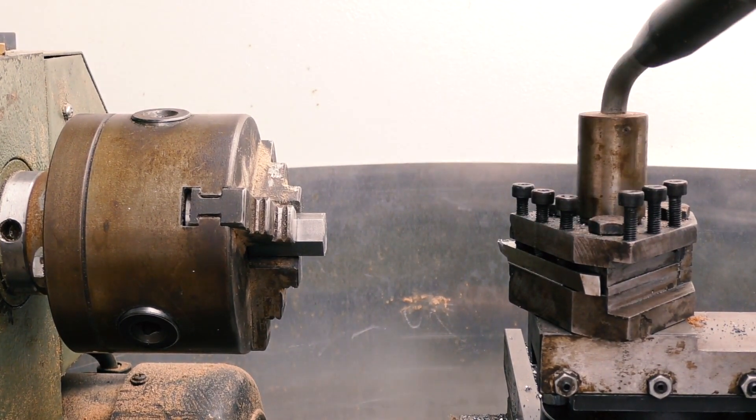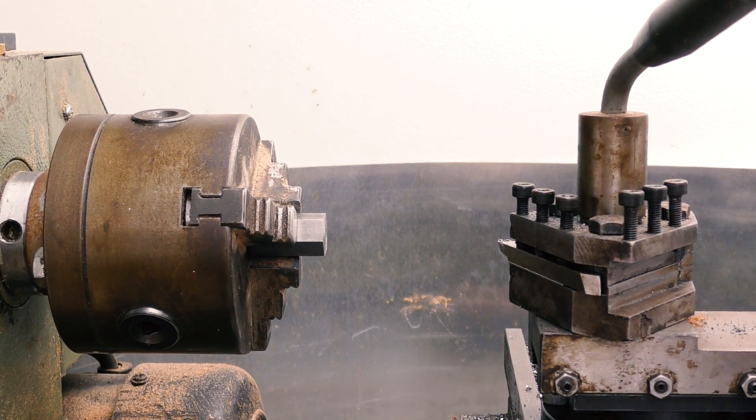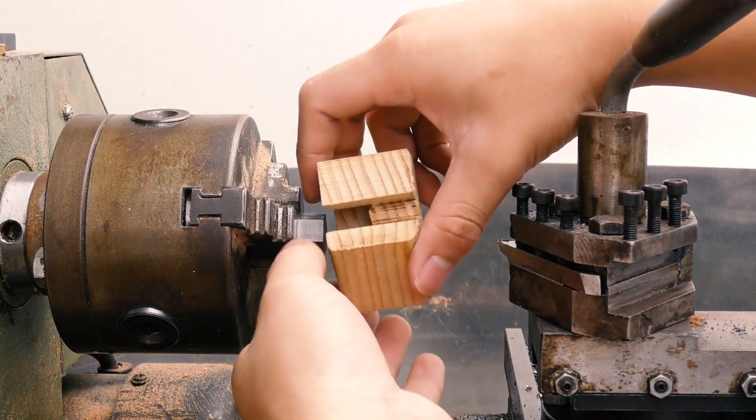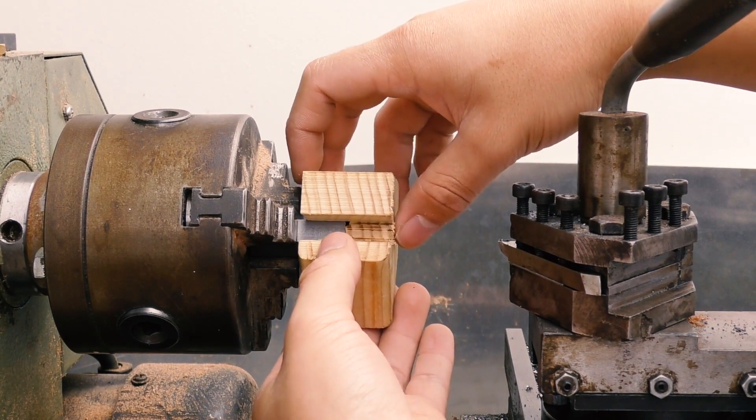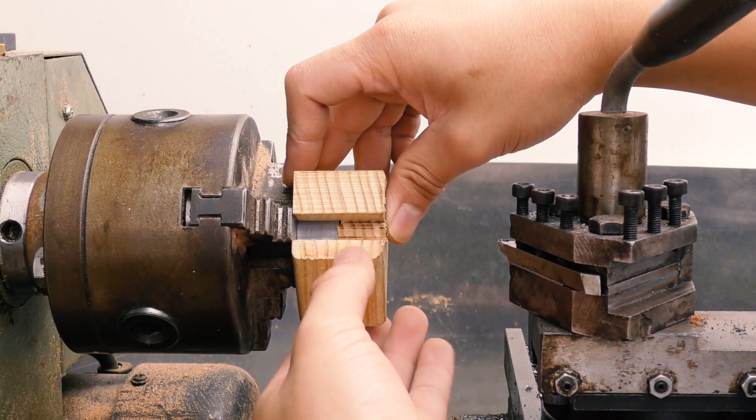I'm going to use the parting tool on the lathe. To make sure that I part off the same distance every time, I've made this little jig which basically indexes it so that the workpiece protrudes out of the chuck the same distance every single time.